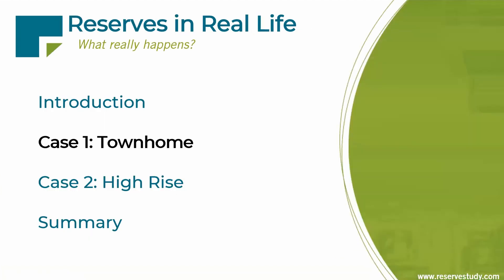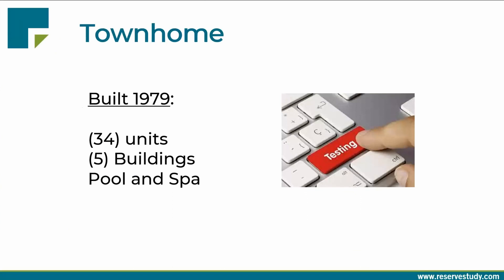That brings us to the heart of our program today — diving into two different reserve studies. We're going to use our online reserve calculator tool, YouPlanIt, to show you what's going on. The first one is going to be a townhome association built in 1979, so forty-plus years old, 34 units, five buildings, pool and spa — not too big, not too small, not too complex, but a nice typical association across the country.